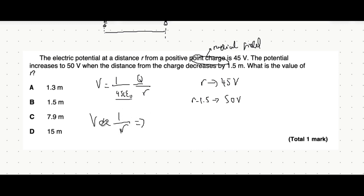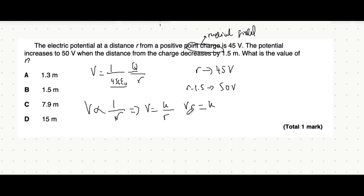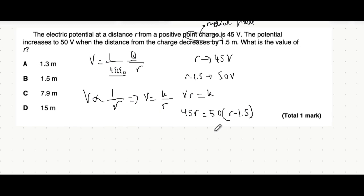What we know about inverse proportion is you can replace this proportion sign with an equals k over r and you can multiply r to both sides and form the equation that the potential multiplied by the distance between them is always constant. What we can say is that the potential difference before the length is decreased multiplied by that value of r is equal to the potential difference after the length is decreased multiplied by that distance now between them which has decreased by 1.5. So r minus 1.5. You can now focus on expanding out the right side. So 50 times r is 50r. 50 times minus 1.5 is minus 75.